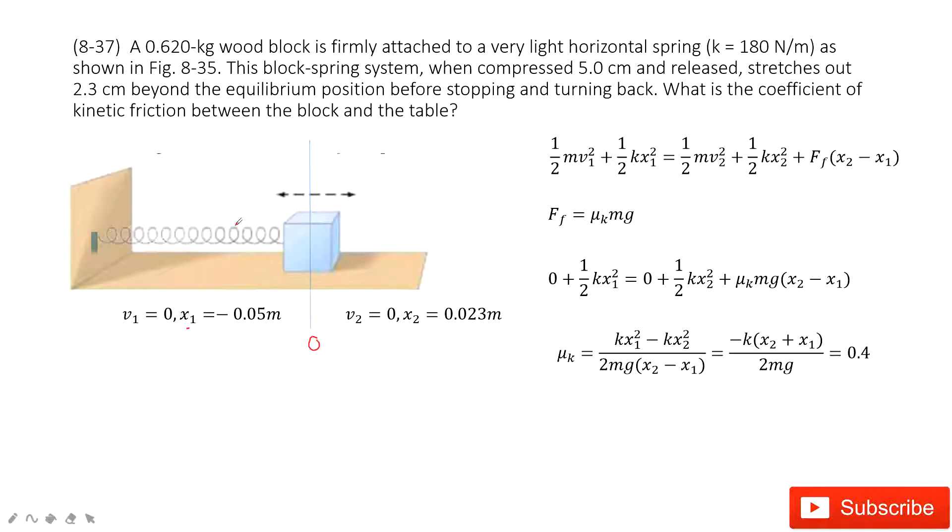So it compressed 0.05 meter, and then the initial velocity is zero. Then we release the box.